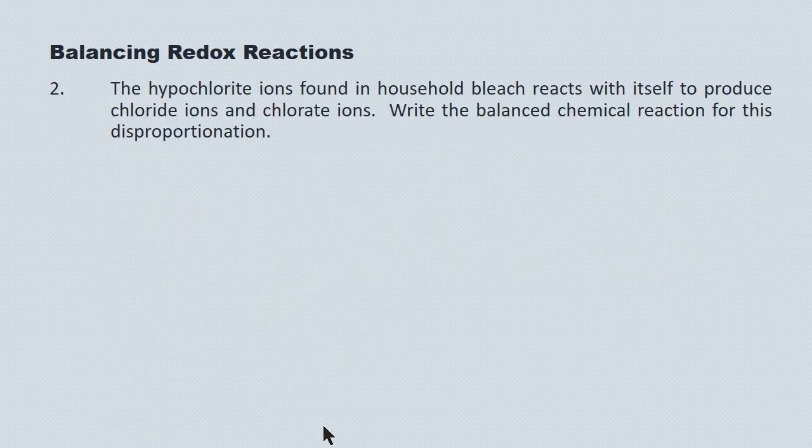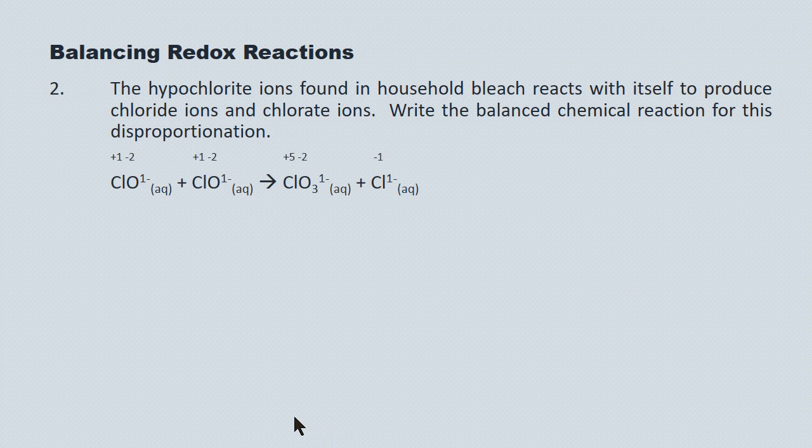Here's another example. The hypochlorite ion is found in household bleach, and it will react with itself to form a chlorate ion and a chloride ion. This is a disproportionation reaction — the chlorine is being both oxidized and reduced. Here's the skeleton reaction and these are the oxidation numbers.